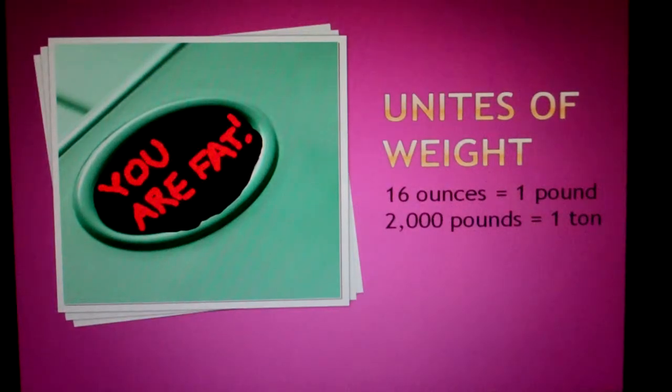Units of Weight. And I've misspelled units. I've made it unites. Okay, we'll have to correct that. Units of Weight. 16 ounces equals 1 pound. 2,000 pounds equals 1 ton.